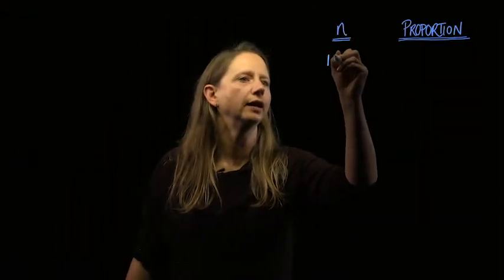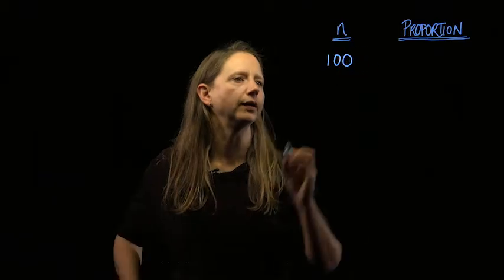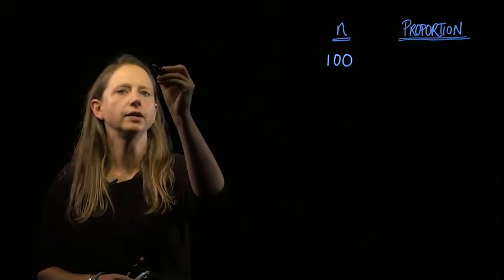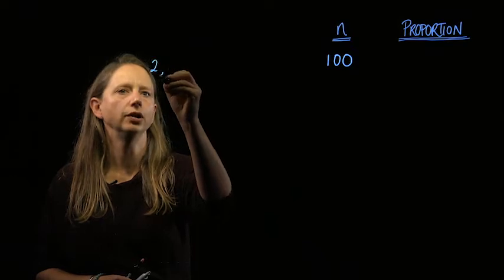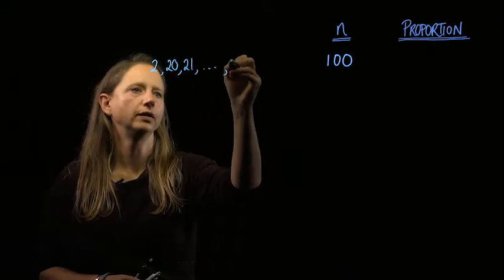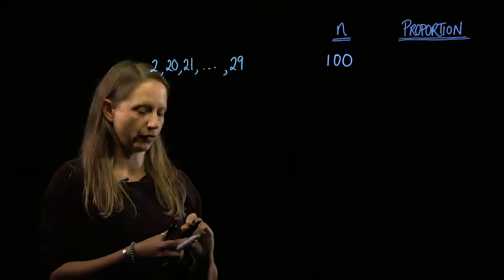So we're told that n, the number of houses, is a three-digit number. Let's start with the smallest value that n could be and see what happens there. If there are 100 houses, then the ones that start with the digit 2 are 2, 20, 21, all the way up to 29. We've got 11 of them.